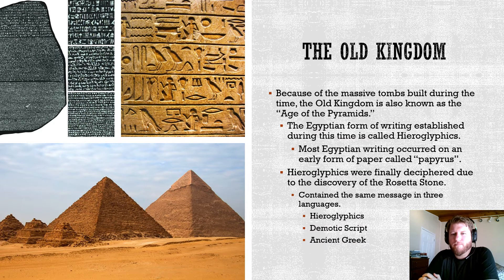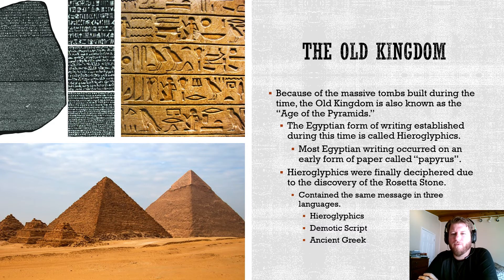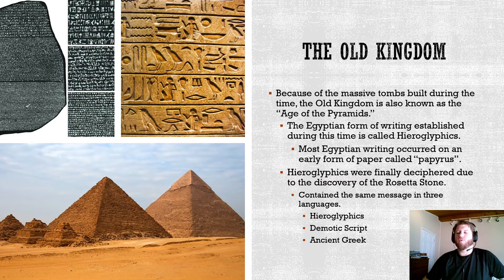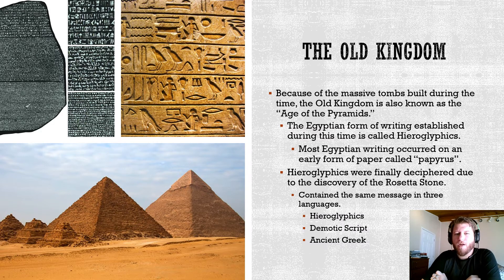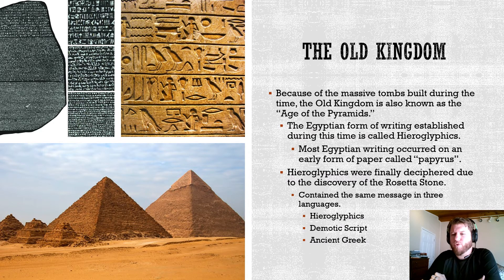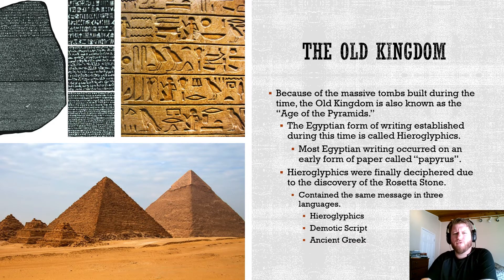Pyramids in ancient Egypt are tombs built for the pharaohs. When pharaohs died, they were interred in these tombs, which were built in a particular way to aid the pharaoh's travel to the afterlife. Pharaohs — like all Egyptians — believed there was a very extensive process for reaching the afterlife. The Egyptian Book of the Dead, also known as the Papyrus of Ani, deals with some of those rituals, which I'll discuss more in the myth and religion section.